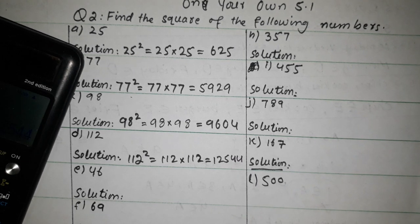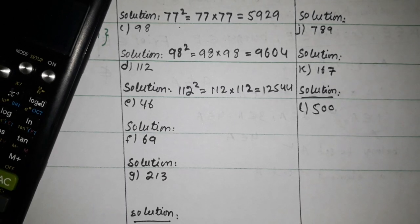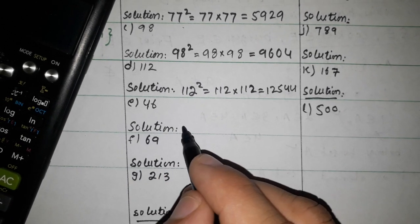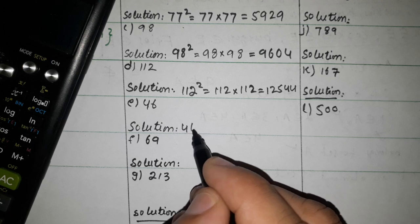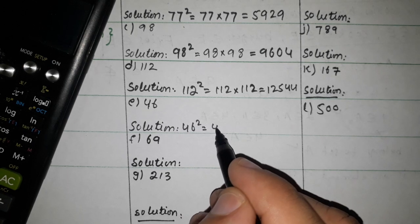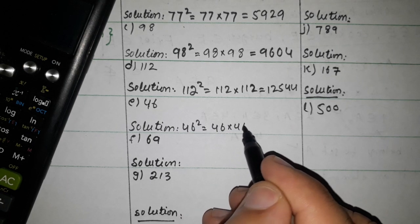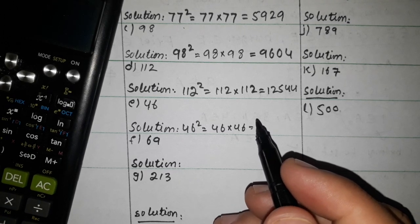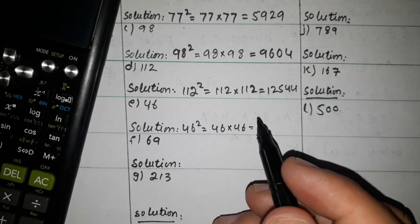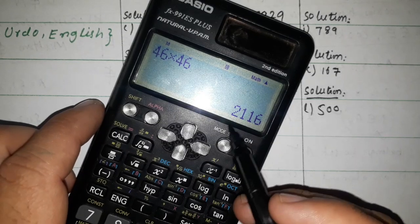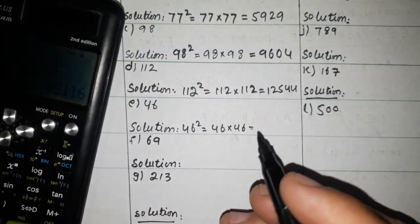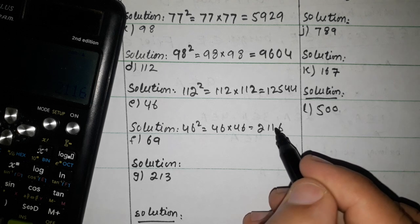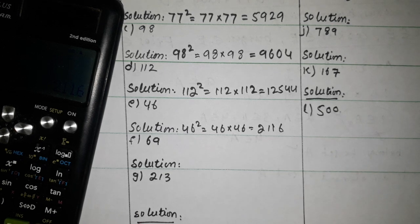Now 46 square. We multiply 46 by 46. 46 multiplied by 46 — the answer is 2116. So 46 squared equals 2116.